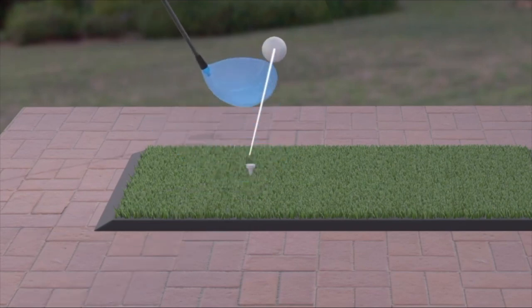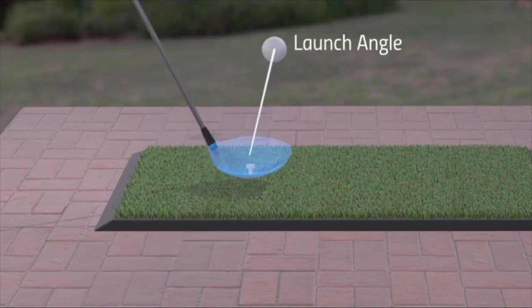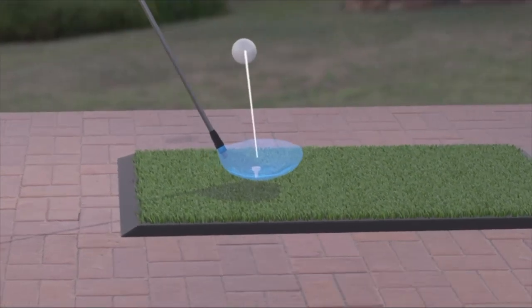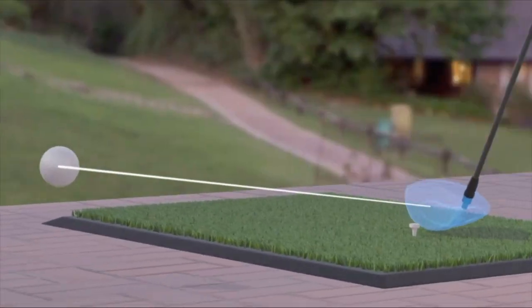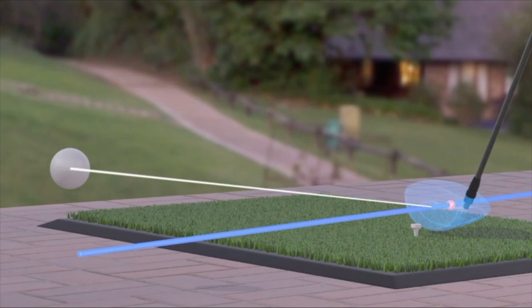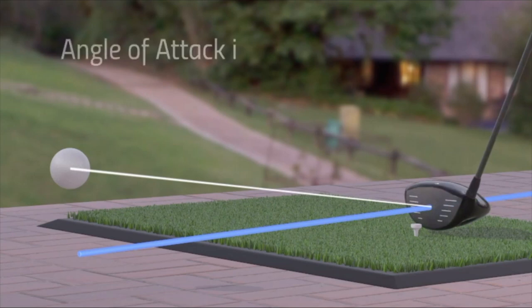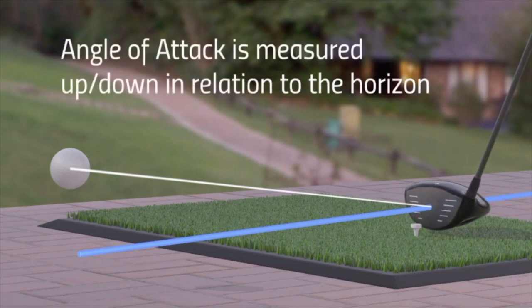That's why when club geometry changes significantly, that can give us a different calculated reading from the radar launch monitor, even though the face was traveling in the same direction. As you can see here, the angle of attack is taken from the volumetric center of the golf club.